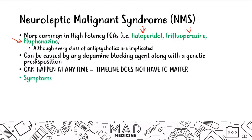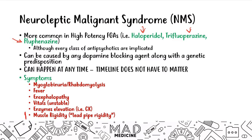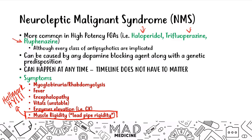NMS symptoms include myoglobinuria or rhabdomyolysis, fever, encephalopathy, unstable vitals, and elevated enzymes like CK. Most critically, patients present with lead pipe muscle rigidity — this is the hallmark presentation of neuroleptic malignant syndrome and is very high yield. Because of this lead pipe rigidity, you'll see enzyme elevations and rhabdomyolysis occurring.